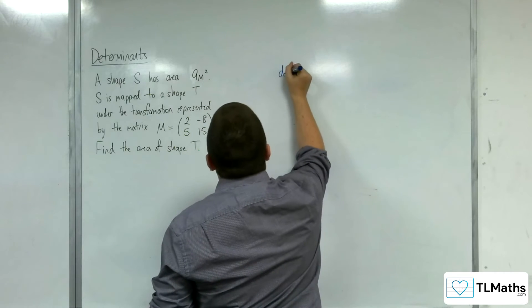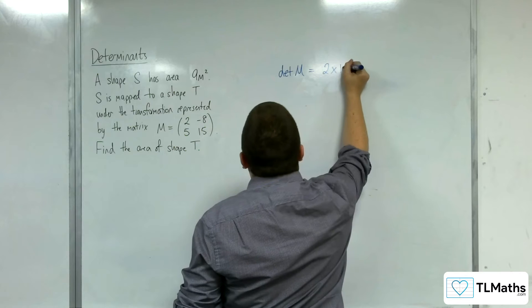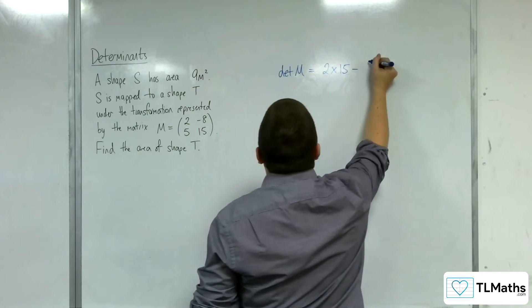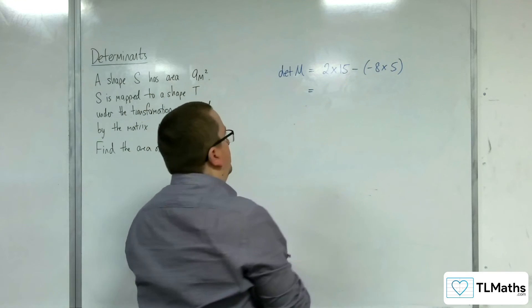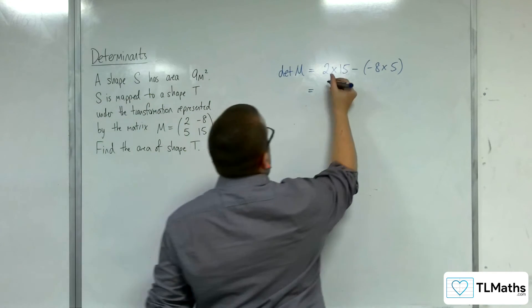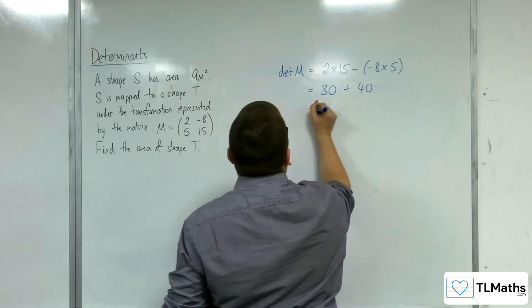So the determinant of matrix M is 2 times 15, take away minus 8 times 5. OK, so what have we got there? That's 30 plus 40, and so 70.